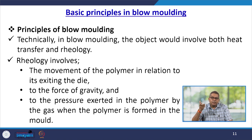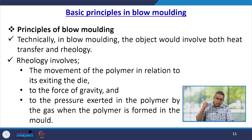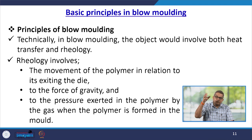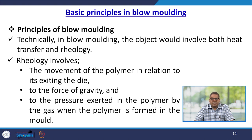Technically, blow moulding involves both heat transfer and rheology. Apart from these, various parameters play a vital role: material flow behaviour, melting temperature, glass transition temperature, and pressure. Rheology involves the movement of the polymer in relation to the existing die, the force of gravity, and the pressure exerted on the polymer by gas when it is formed in the mould.